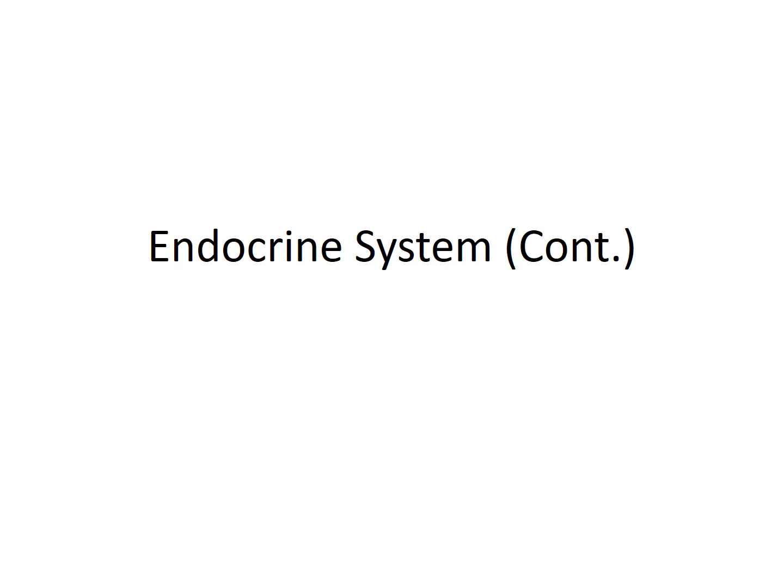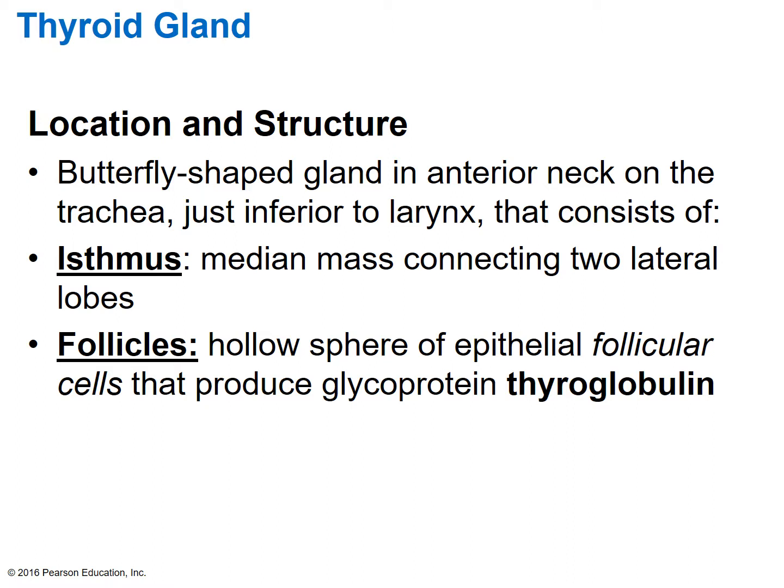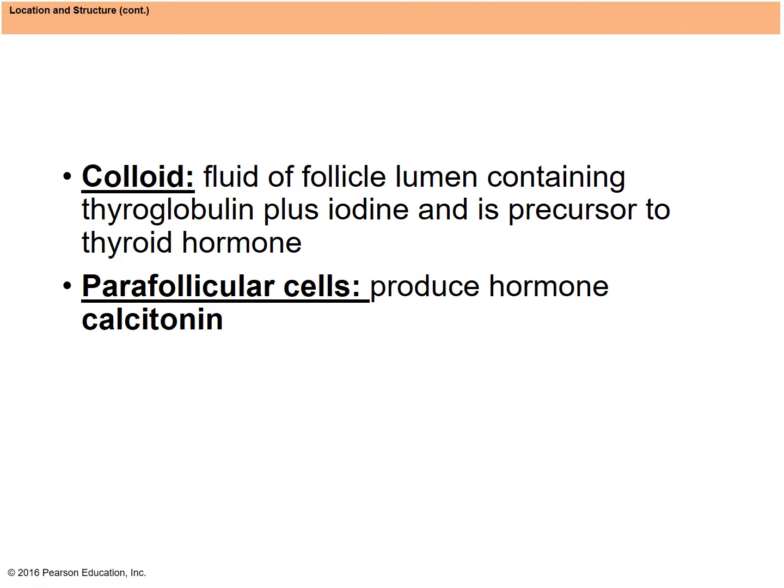We are continuing with the endocrine system and the various glands. The thyroid gland is next — it's a butterfly-shaped gland on the front of the neck near the trachea. It is composed of the isthmus, which is the middle portion, connecting the two lateral lobes. Within the lobes you have parafollicular cells producing calcitonin, and the colloid, which is the fluid containing thyroglobulin plus iodine, the precursor to the thyroid hormone.